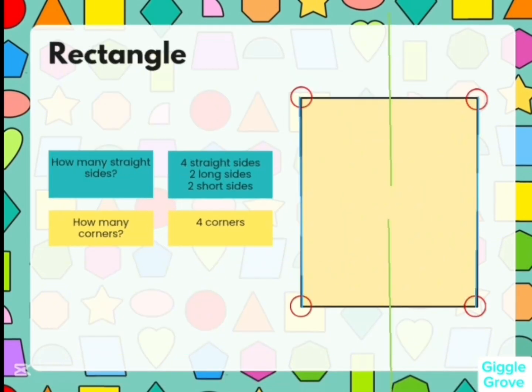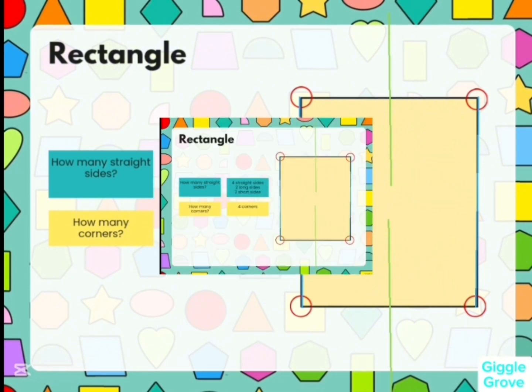Rectangle. How many straight sides? Four straight sides: two long sides and two short sides. And how many corners are there? There are four corners.